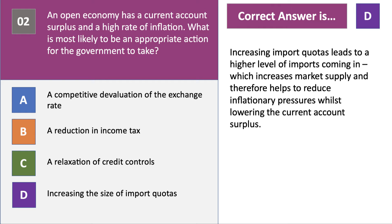Competitive devaluation would add to inflationary pressure as imports become more expensive. A reduction in income tax would cause the current account surplus to fall but adds to demand-pull inflationary pressure, as would option C. Increasing import quotas raises the volume of imports, increases market supply, and therefore helps reduce demand-pull inflationary pressure whilst also lowering the current account surplus.